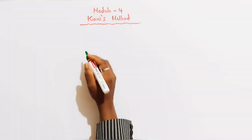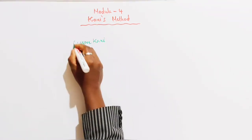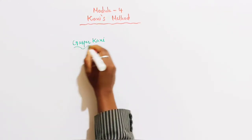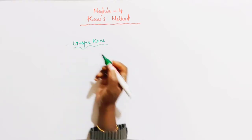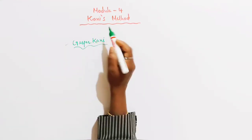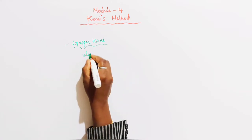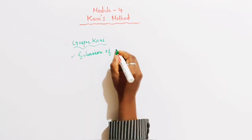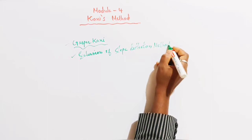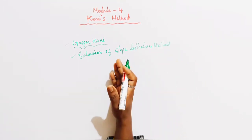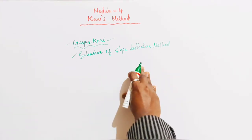Kani's method was developed by Gasper Kani, a German engineer. Kani's method — spelled K-A-N-I — is actually an extension of the slope deflection method.